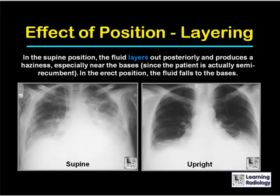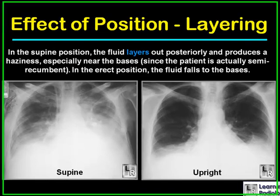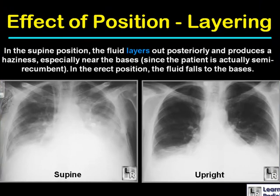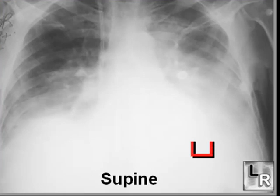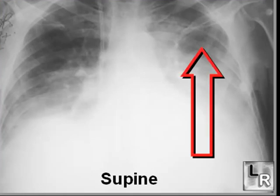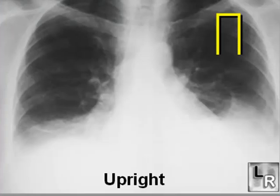Don't forget about the effect of the patient's position and layering on the appearance of the size of pleural effusions. These are the same patient x-rayed about an hour apart — one supine, one upright following removal of the central venous catheter. In the supine position, fluid tends to layer out posteriorly and appears larger than when it falls to the bottom of the pleural space in the upright position.